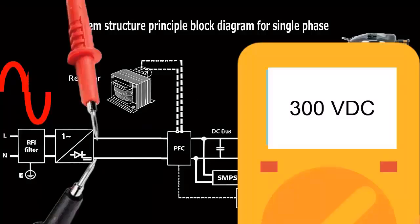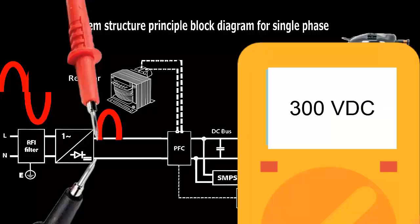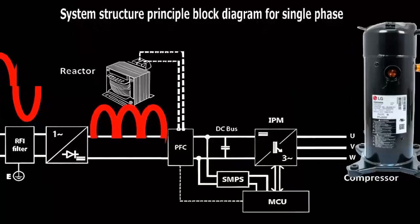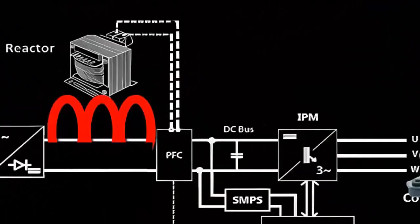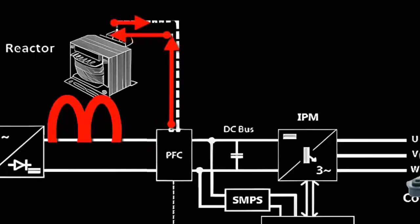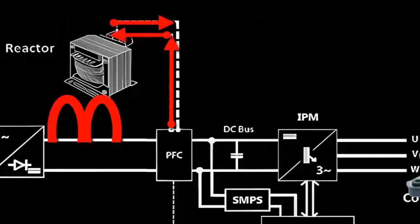Once rectified, the direct current goes to the PFC circuit, or power factor correction circuit, which optimizes the use of electricity so that the equipment operates as efficiently as possible. To achieve this, the PFC circuit performs the following functions.